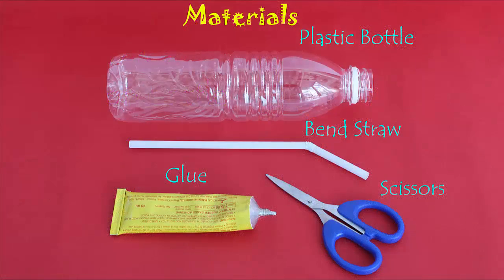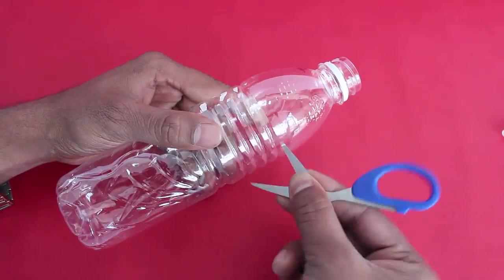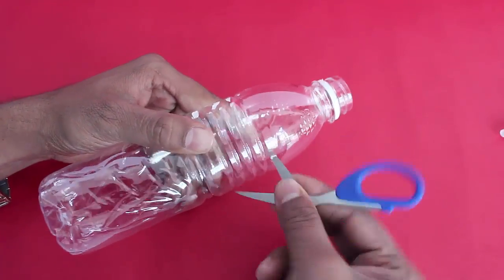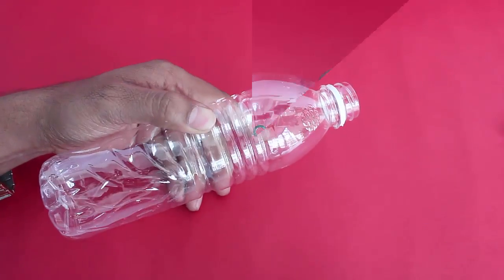To make this simple pump you need a plastic bottle, a flexible straw, rubber glue and scissors. First make a small hole 4 cm below the bottleneck.